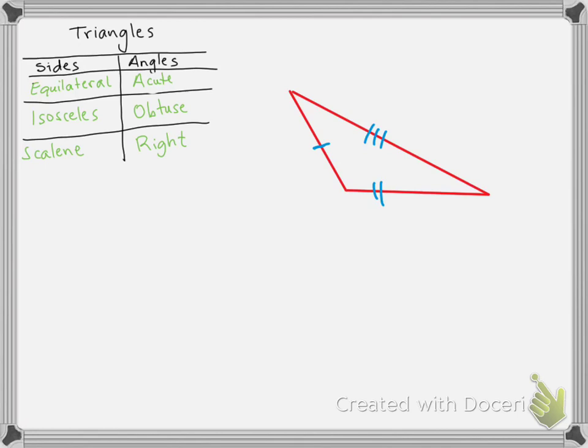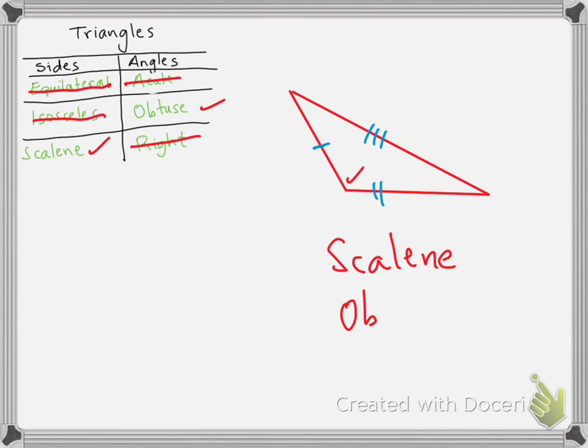Look at this one — it has no congruent sides at all. Does it have three equal sides? No. At least two equal sides? No. Does it have no equal sides — three different sides? Yes. Does it have three acute angles? No. At least one obtuse angle? Yes. One right angle? No. So the name of this triangle is scalene obtuse.